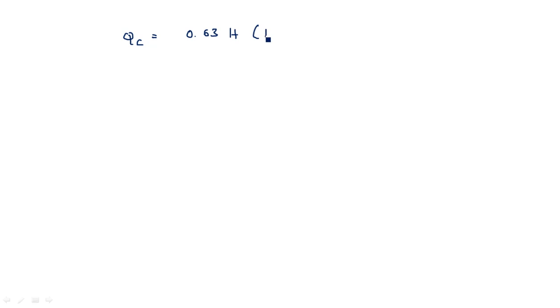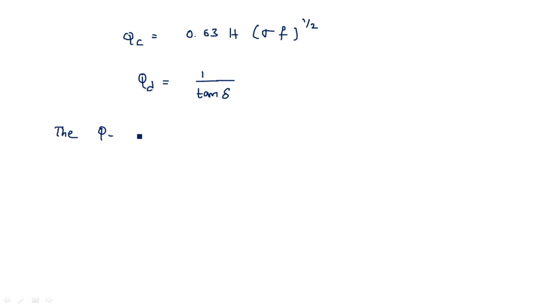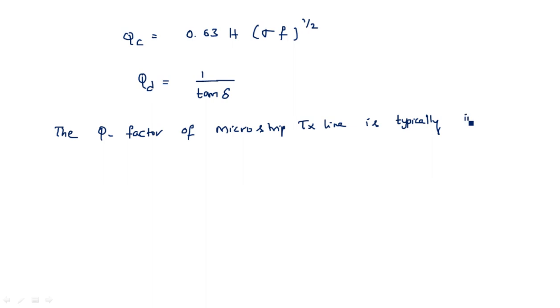The quality factor associated with the conductor is: Qc = 0.63 × h × √(σ × f), and Qd = 1 / tan δ. The overall unloaded quality factor 1/Q = 1/Qc + 1/Qd + 1/Qr for a microstrip transmission line is typically in the order of 250.